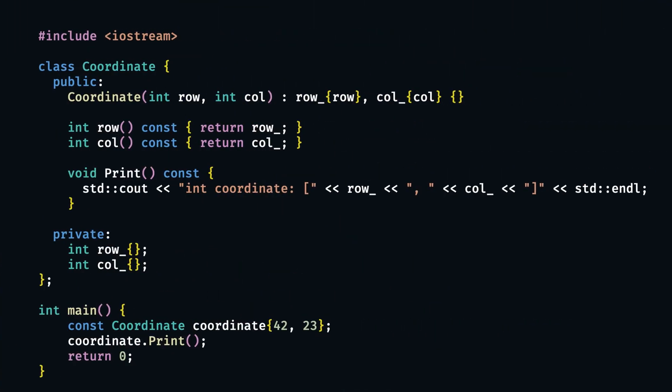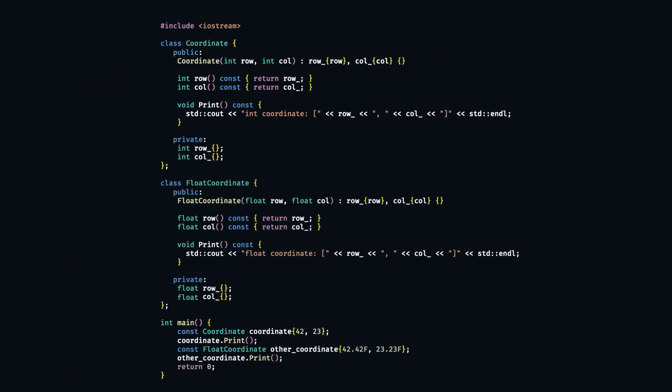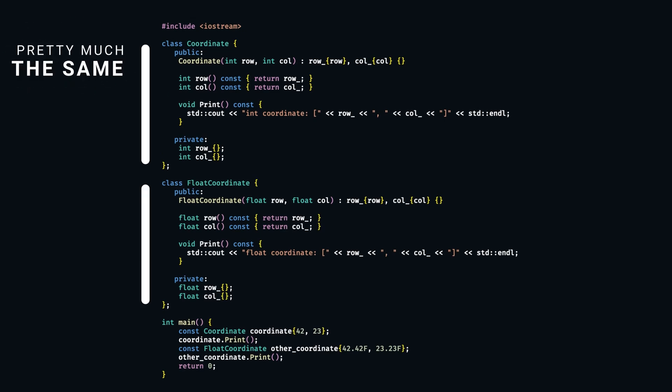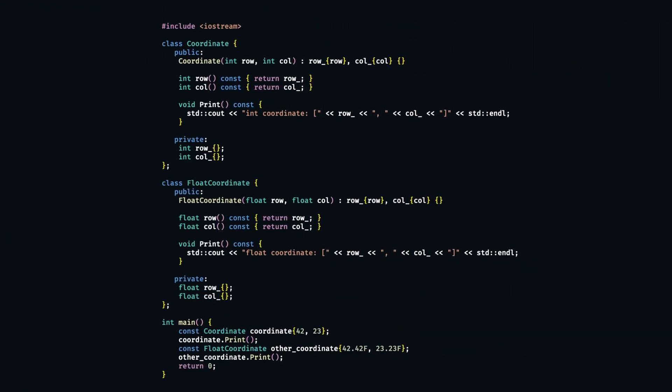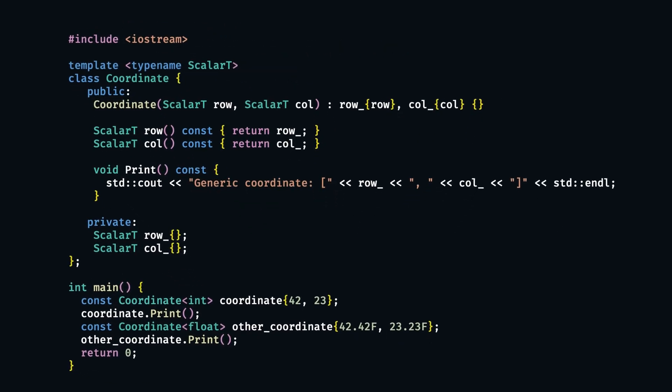This is all good, but I come from robotics and image processing background, where we regularly need the so-called subpixel resolution — meaning that our coordinates should be represented by a floating point number. So we suddenly also need a float coordinate class. And that is not nice. And of course you've already guessed that we can use class templates to get around this in an elegant way.